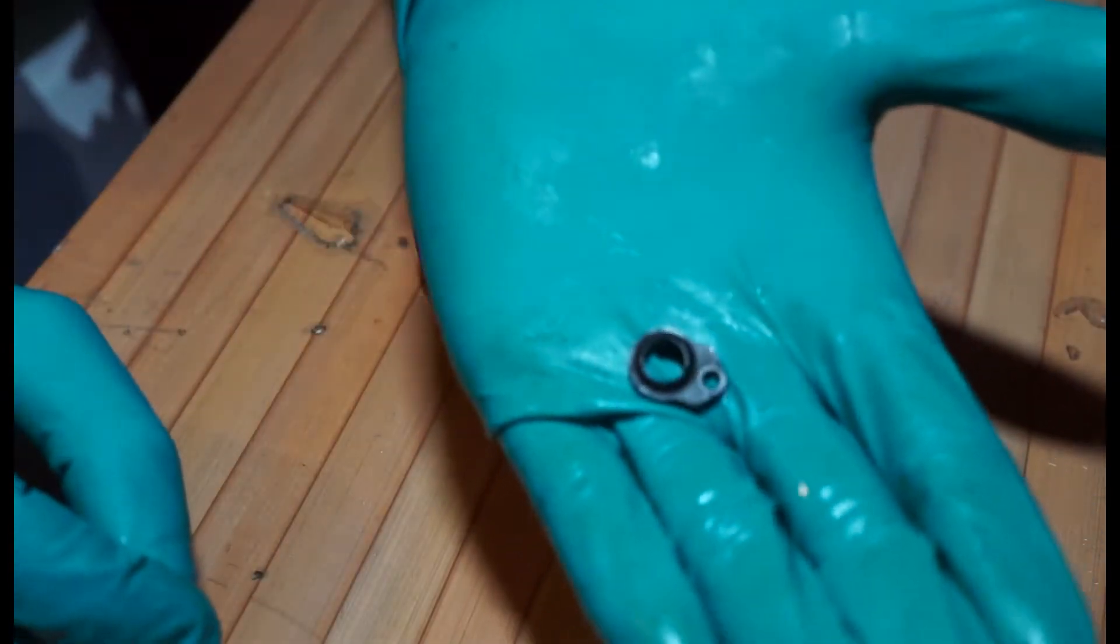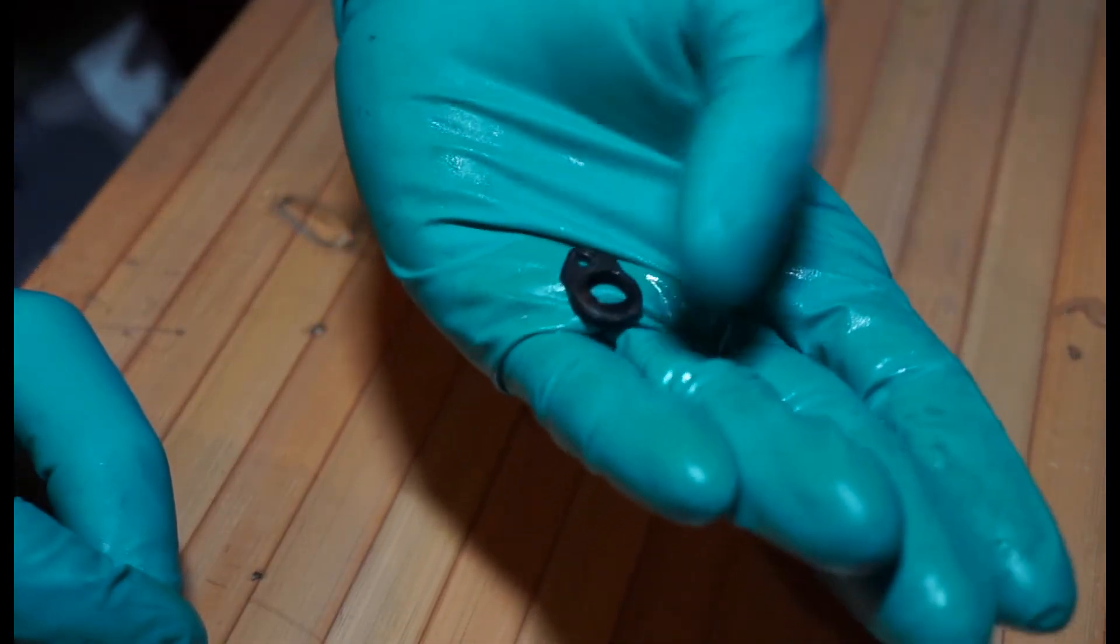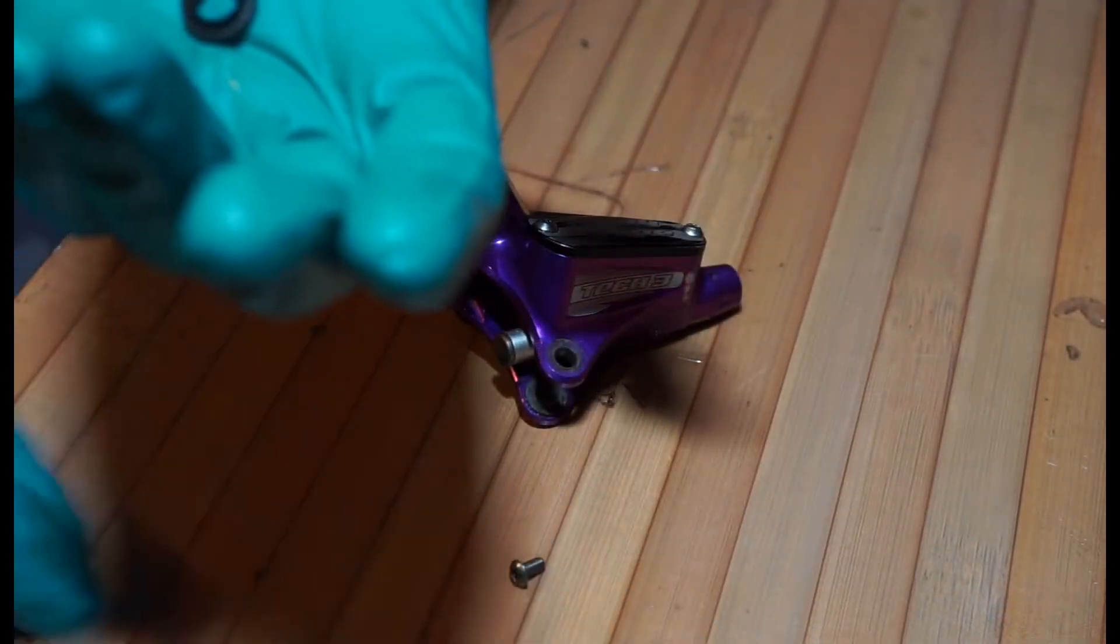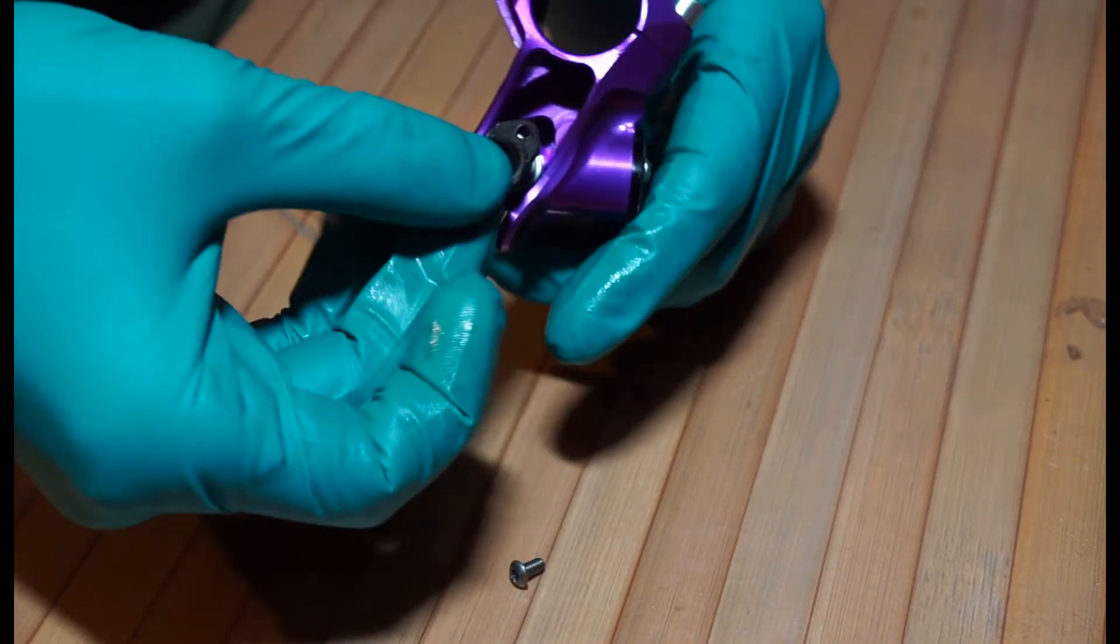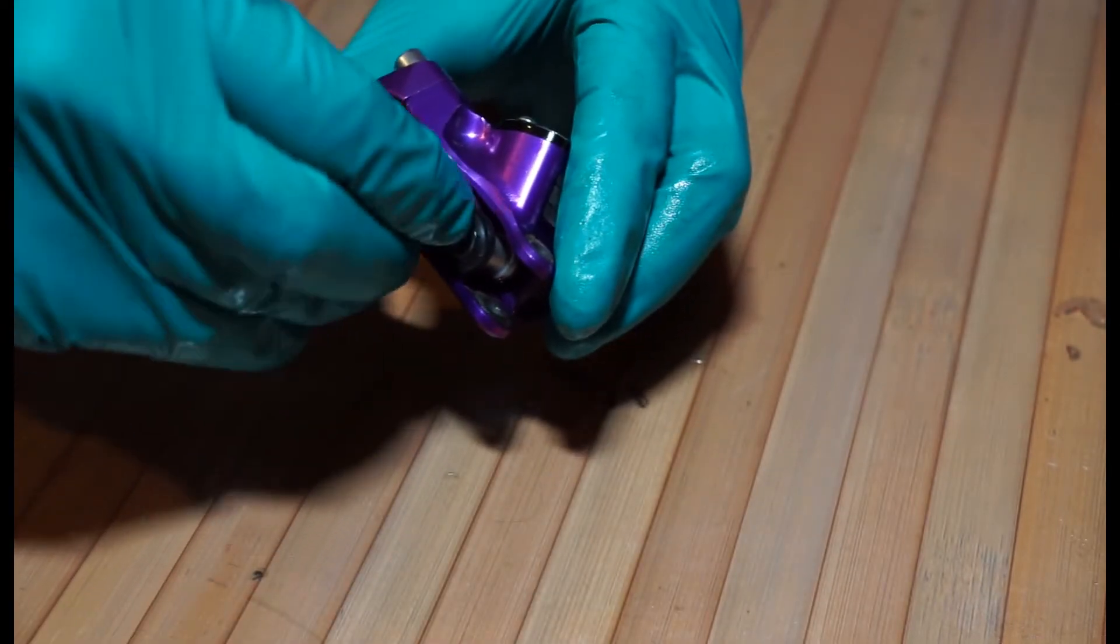Next up you need your, I don't know what they actually call it, some sort of plate. And a little screw as well. Torx T10. That's just going to slide that way, down to there. Put the bolt in there.